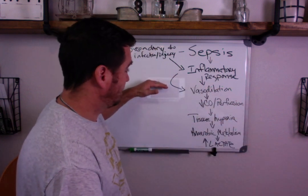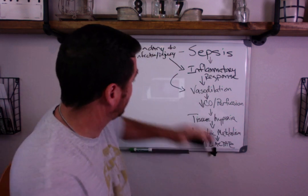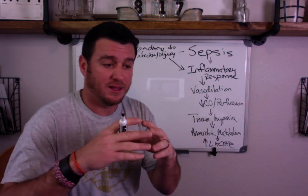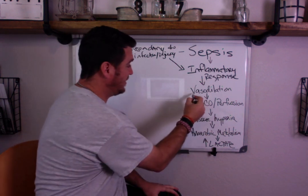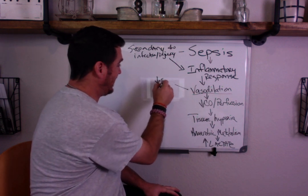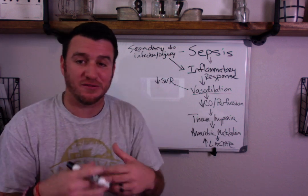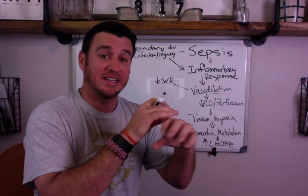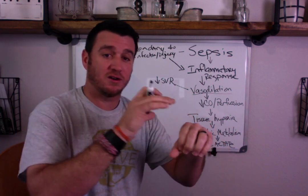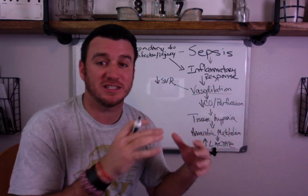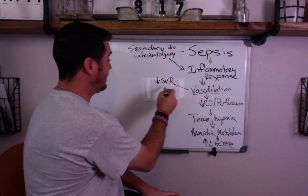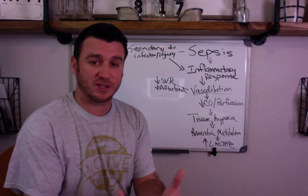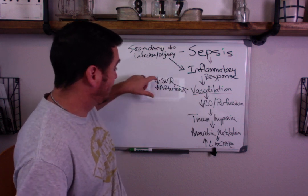Now, vasodilation has a very large impact on cardiac output. When the vessels vasodilate, you have a decrease in SVR — systemic vascular resistance. That means the resistance that the left ventricle is contracting against decreases. The heart no longer has the resistance it was pushing against, so the blood pressure drops. Decreased SVR decreases afterload, which is the resistance to ventricular contractions. So if you vasodilate, you get a decrease in SVR and a decrease in afterload.